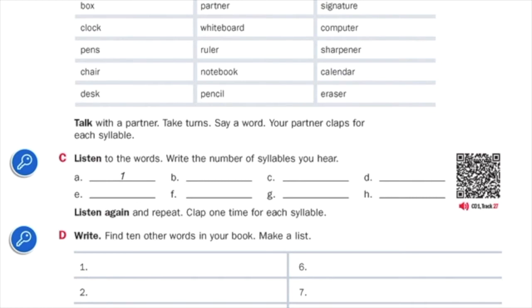A. From. From. From has one syllable. B. China. China.